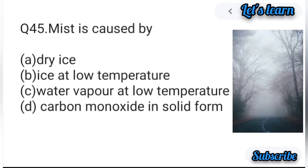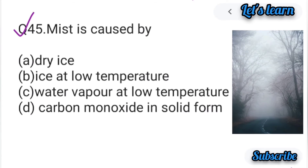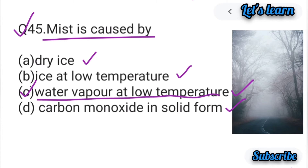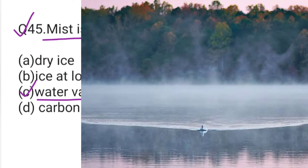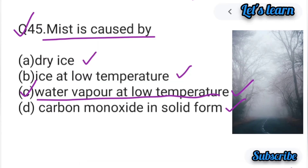Question number 45: Mist is caused by — mist किसकी वजह से बनता है? Options: dry ice, ice at low temperature, water vapor at low temperature, या carbon monoxide in solid form। Option C correct है — water vapor at low temperature। Mist कैसे बनता है: छोटे-छोटे water droplets जो हवा में suspended हो जाते हैं low temperature पर — यही mist है। Option C correct है।